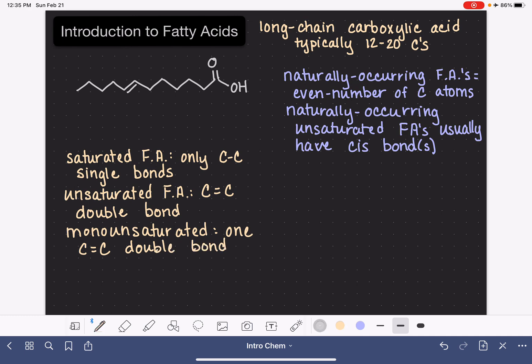When you have multiple carbon-carbon double bonds, which is possible, then that molecule is described as polyunsaturated, which means many unsaturations. Polyunsaturated is defined as two or more carbon-carbon double bonds.